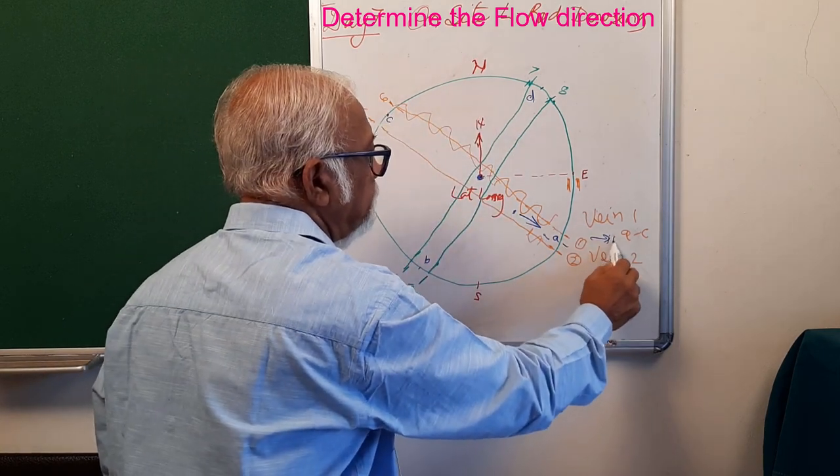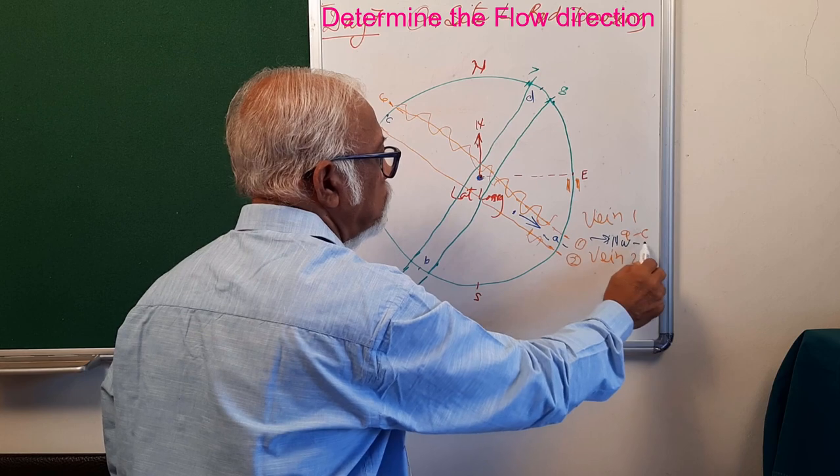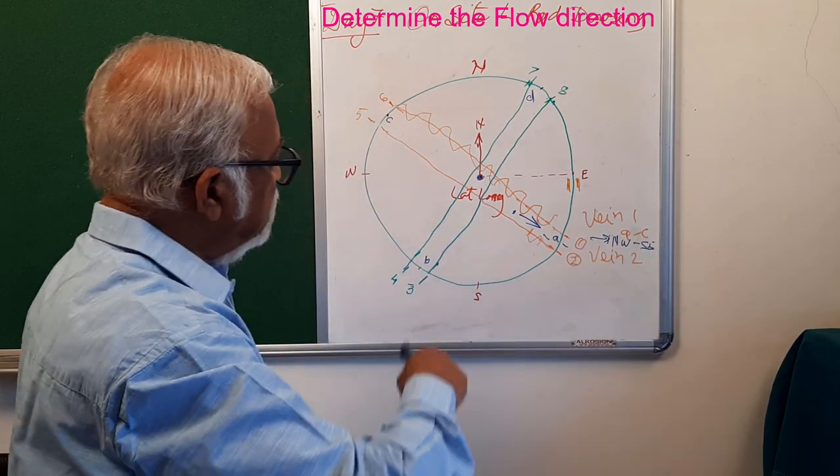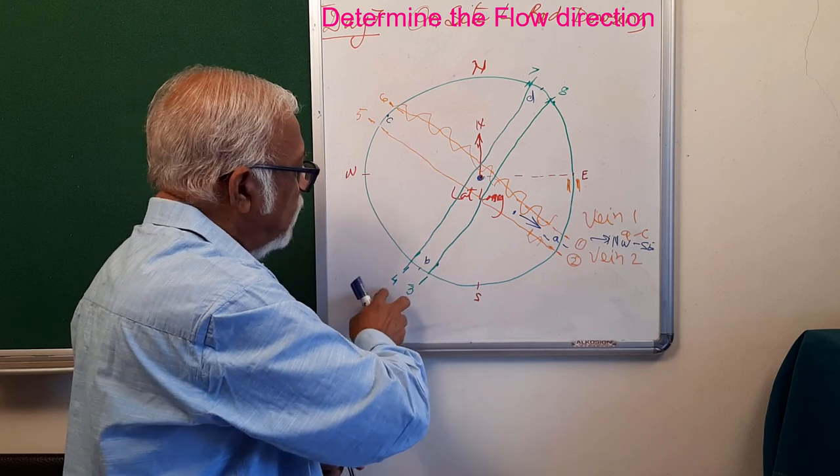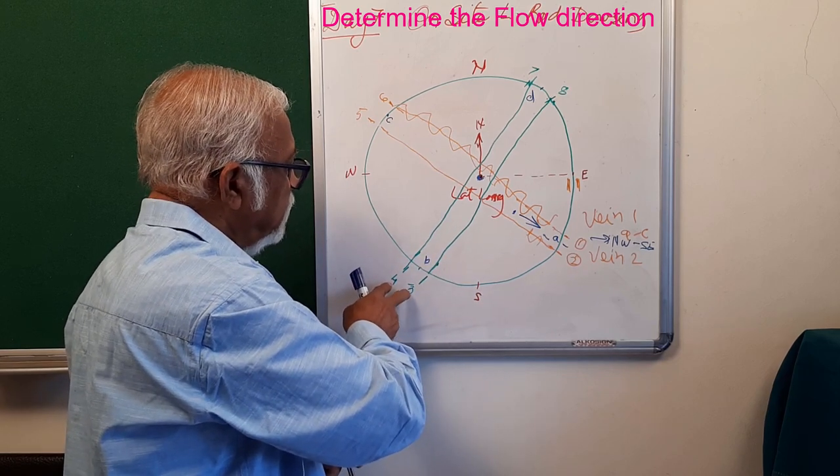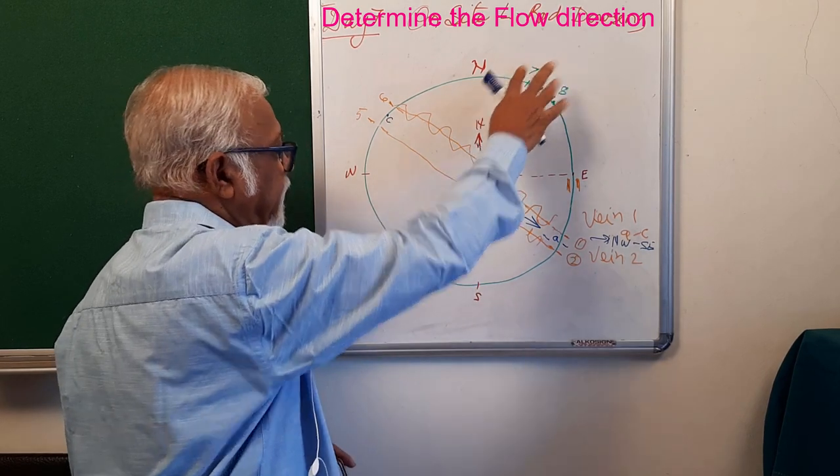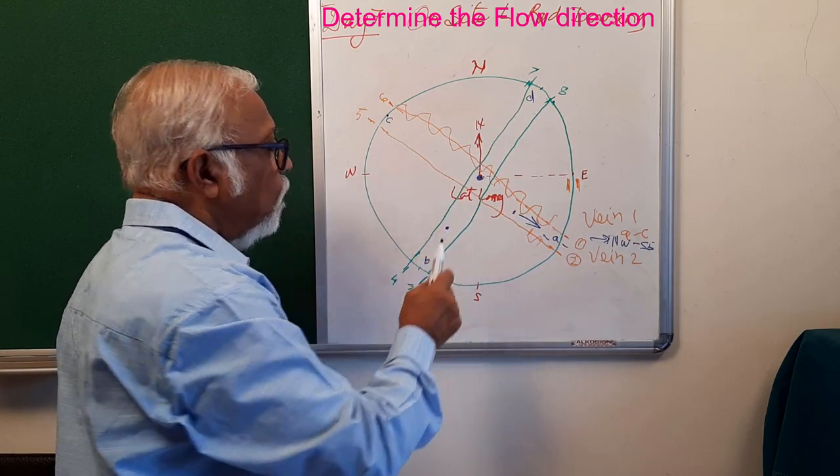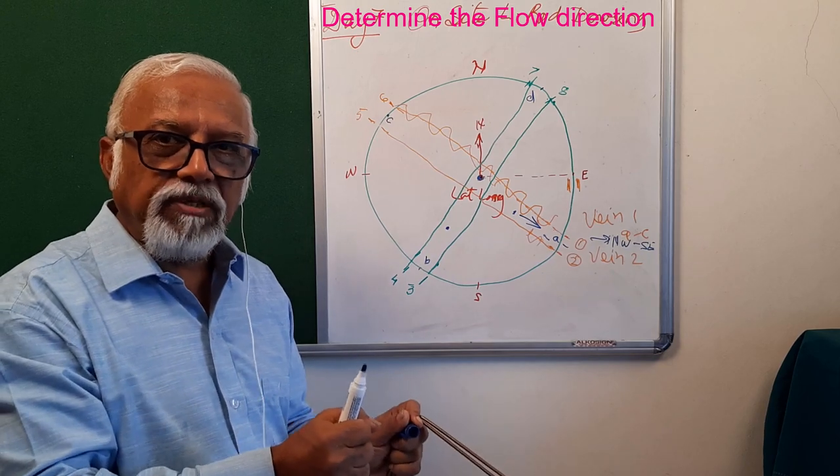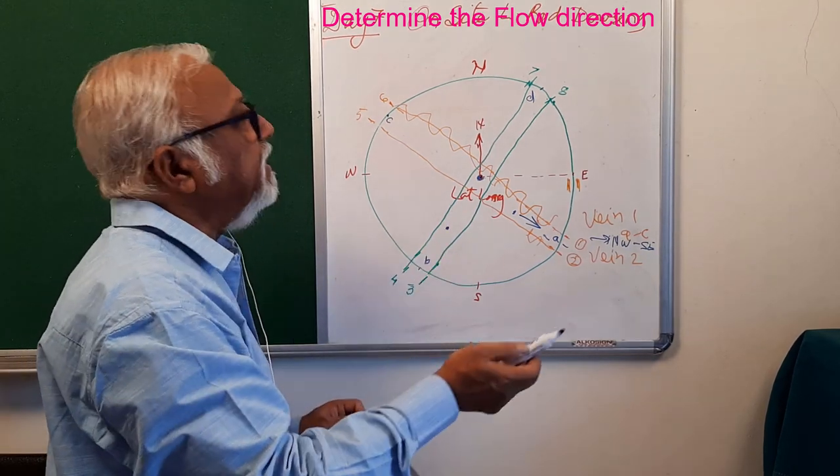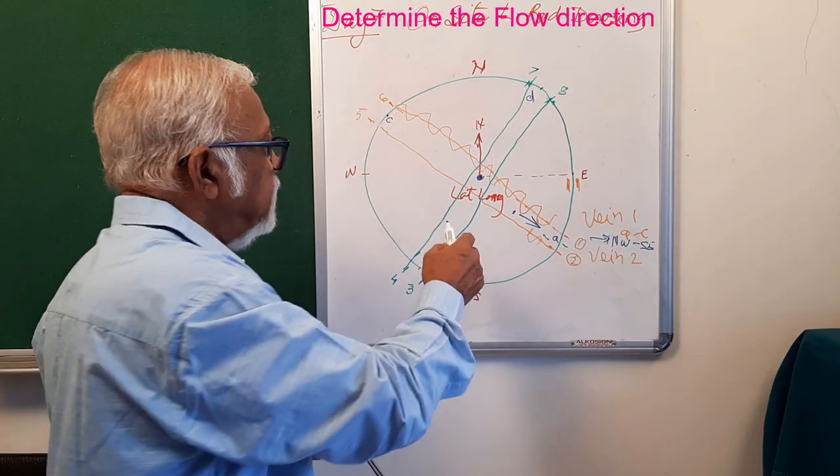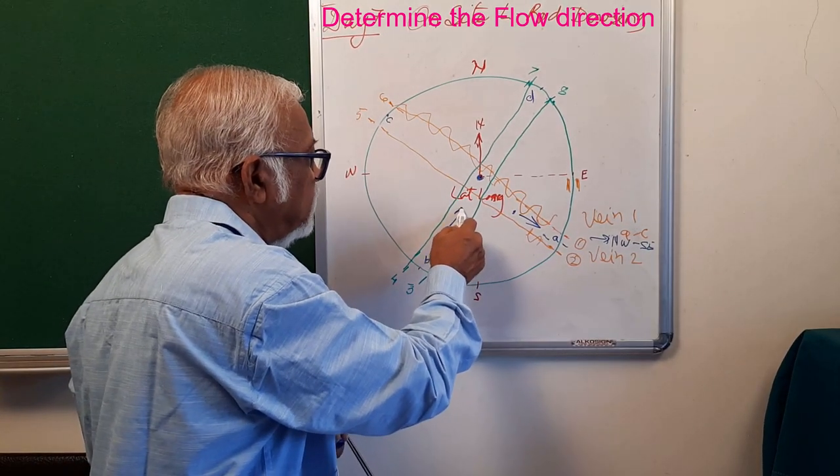Now similarly, I will stand on the vein between three and four and seven and eight, so points B and D. I will stand somewhere here, hold my rods in search position, and then try and get to know the direction of the flow. I will get the direction of the flow somewhat like this.